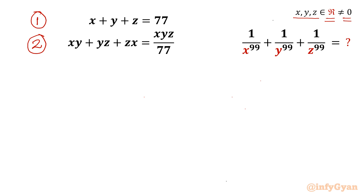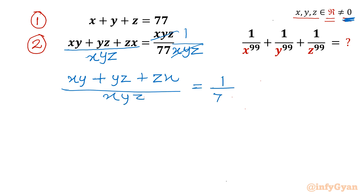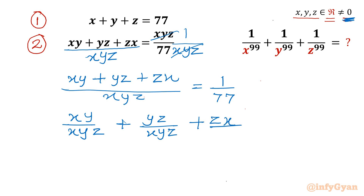Let us consider equation number 2. I will divide both sides by xyz, since xyz is nonzero. So I can cancel xyz on both sides. It becomes xy plus yz plus zx over xyz equal to 1 over 77.